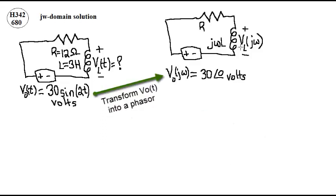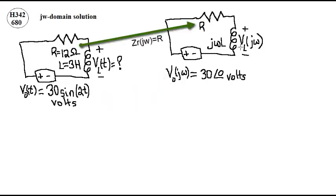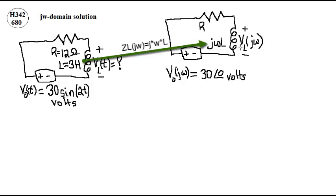The transform of the voltage source yields a complex number. The impedance of the resistor is R. The jω domain impedance of the inductor is jωL.